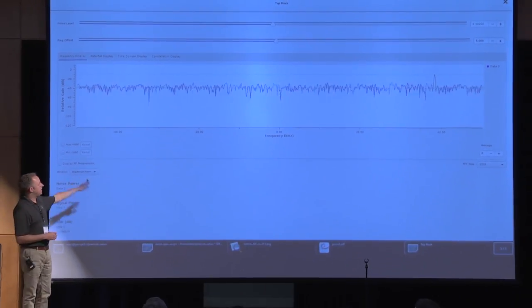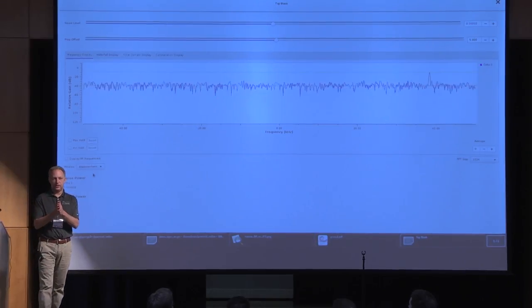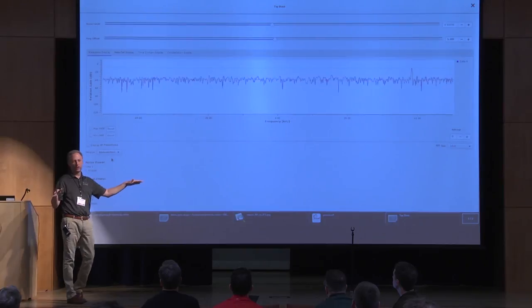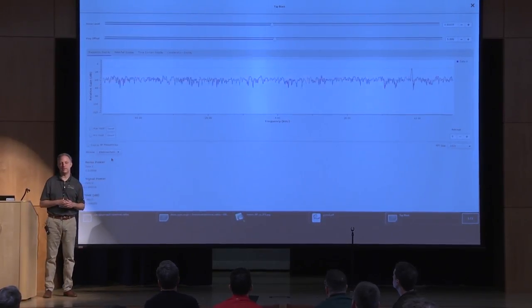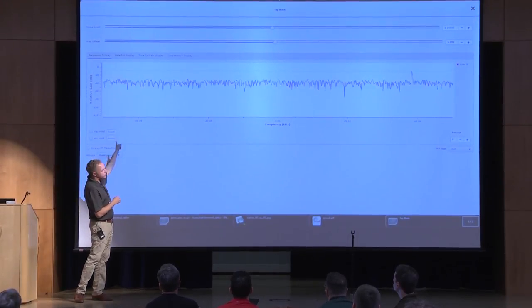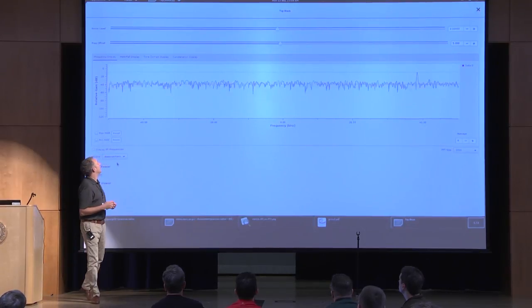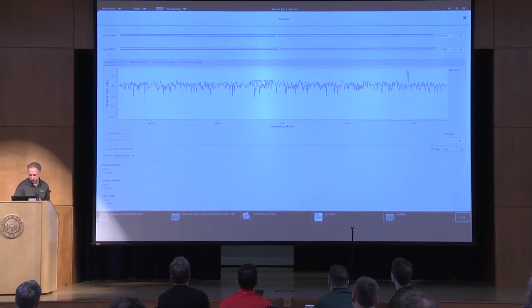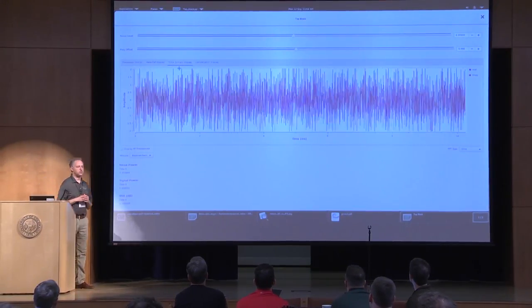So in actuality, so the answer that most people give is the signal to noise ratio is 30 dB, because they see a tone that's 30 dB above this level of noise. The actual answer, which we'll see when I turn on the GNU radio flow graph stuff to measure it. So I'll turn on the number sinks that tell us the power and the SNR. We'll run this. And we can see that actually noise power is 1, signal power is 1. The SNR is 0.